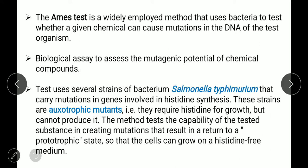Auxotrophs require an organic growth factor to grow. Only if histidine is present will the bacteria grow — that is what auxotrophs are. They require histidine for growth but cannot produce it themselves. The mutant has already been made histidine-minus, so the strain lacks the ability to produce histidine by itself. The method tests the capability of tested substances to create mutations that result in a return to a prototrophic state, so that cells can grow on a histidine-free medium.